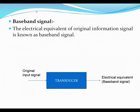Next we will discuss what is baseband signal. The electrical equivalent of the original information signal is known as baseband signal. Here is one diagram from which we will see what is baseband signal. The original input signal is applied to a transducer. This transducer converts the original information signal into an electrical equivalent of the signal, and that signal is called as baseband signal.